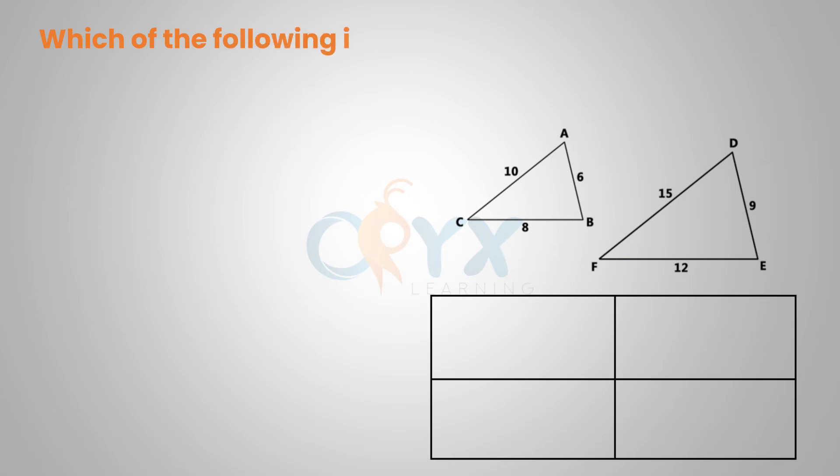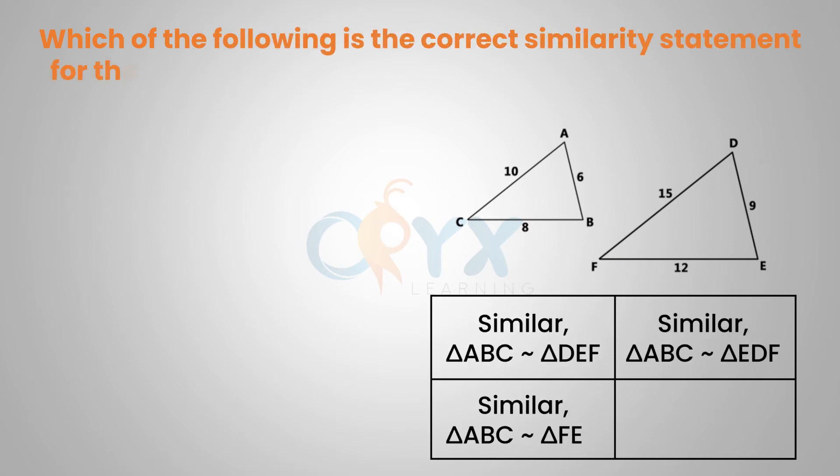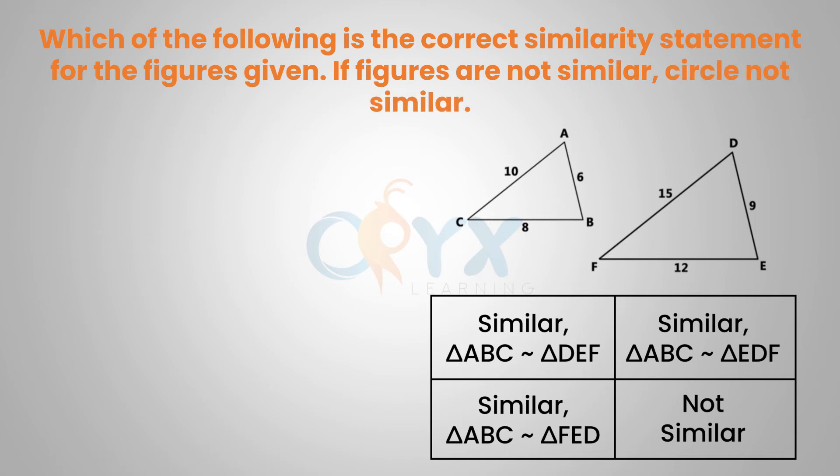Which of the following is the correct similarity statements for the figures given? If the figures are not similar, circle not similar. Setting up our proportions, we would get CA over FD equals 10 over 15, or 2 thirds. AB over DE would equal 6 over 9, also reducing down to 2 thirds.